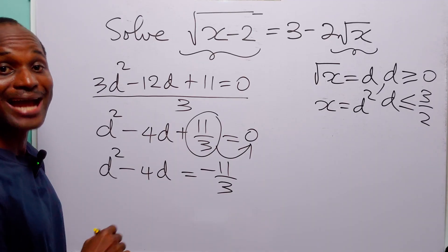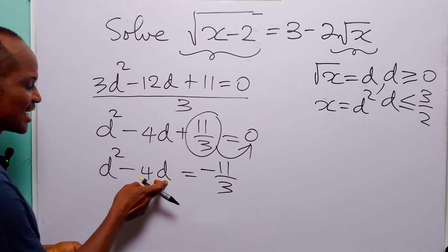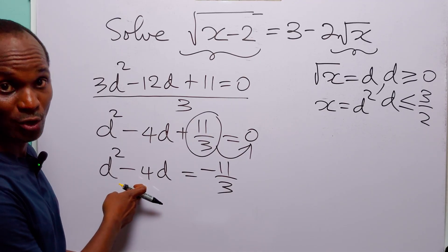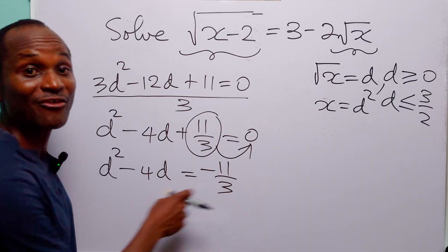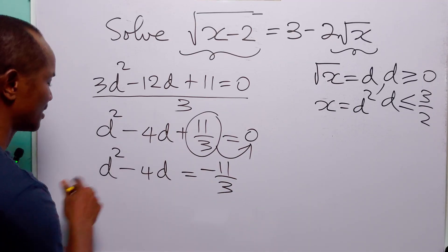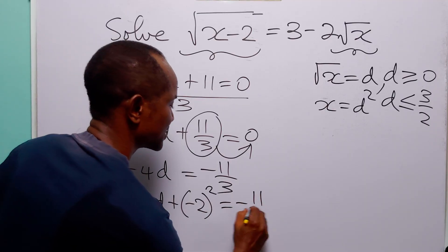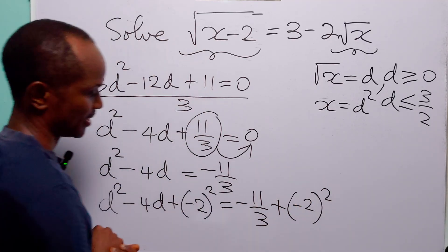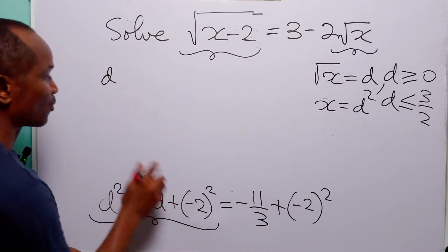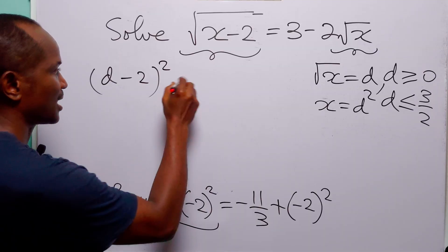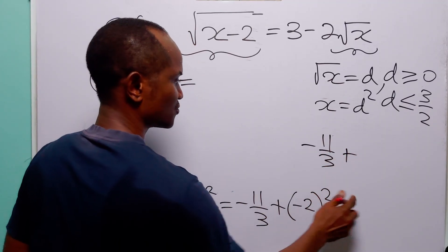The next thing we are going to do is add the square of half the coefficient of d to both sides of this equation to complete the square. The coefficient of d is minus 4, half of minus 4 is minus 2, and the square of that is minus 2 squared. So we are going to add minus 2 squared to both sides. We have d squared minus 4d plus minus 2 squared is equal to minus 11 over 3 plus minus 2 squared. The left-hand side is a perfect square, so we take d minus 2 and square it, equal to minus 11 over 3 plus 4.